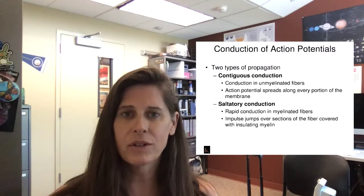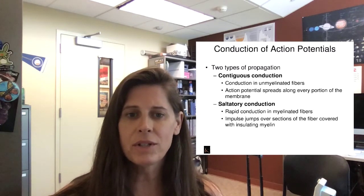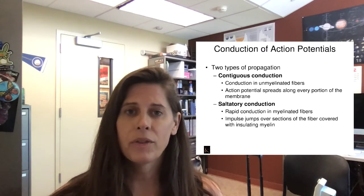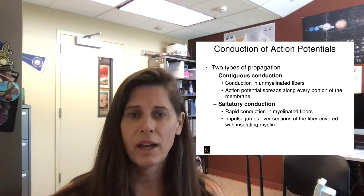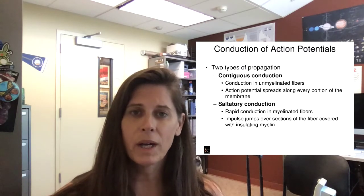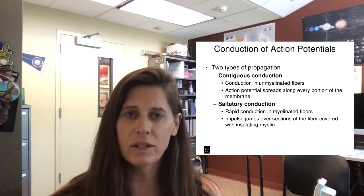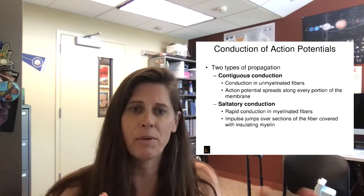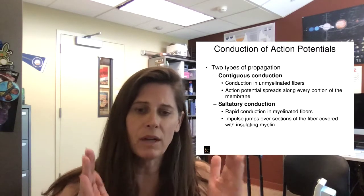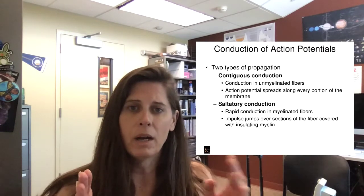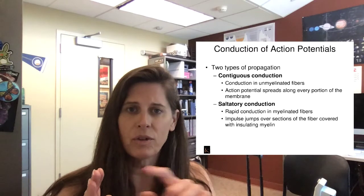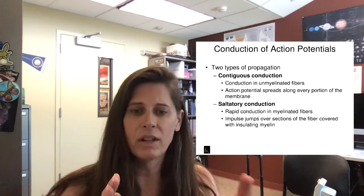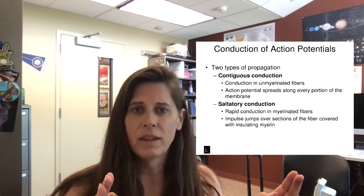There are really two types of propagation for action potentials: one is called contiguous and the other is called saltatory. These have to do with how fast they are and the structure of the neuron being stimulated. Contiguous conduction is slower because the action potential spreads along every portion of the membrane — every single voltage-gated sodium and potassium channel opens and closes along the axon.